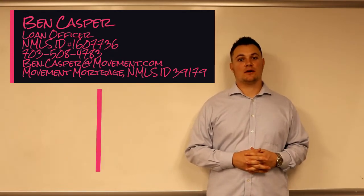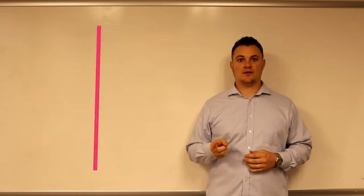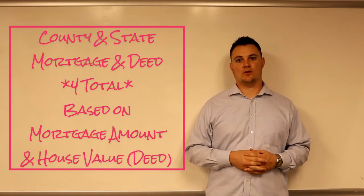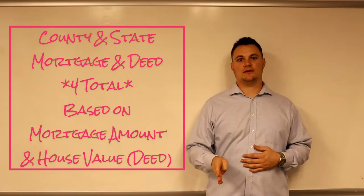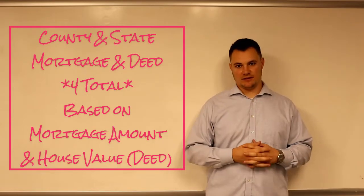The main ones are a county and state mortgage and deed fee. So that's a total of four. You got the county mortgage and the county deed, and then the state mortgage and the state deed fee.